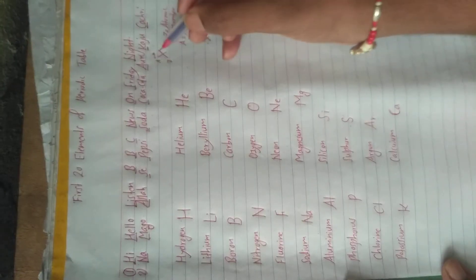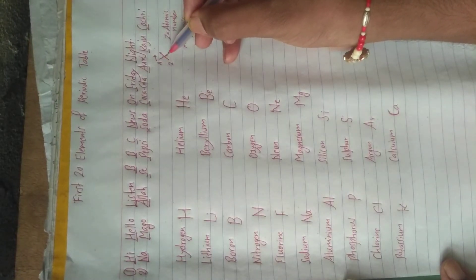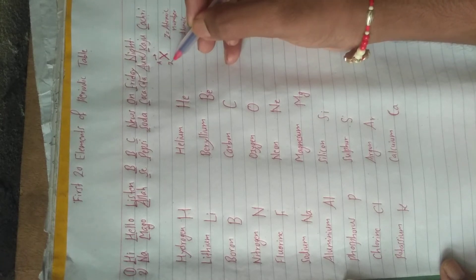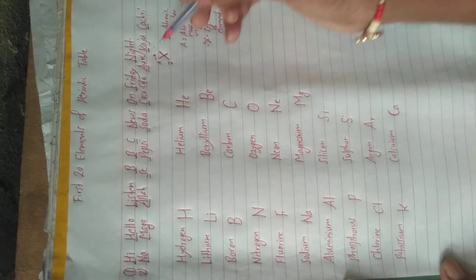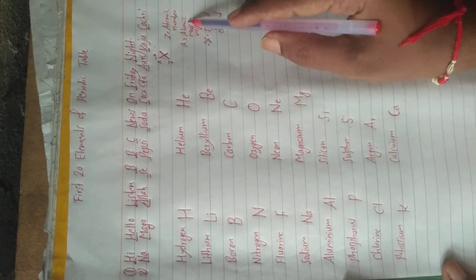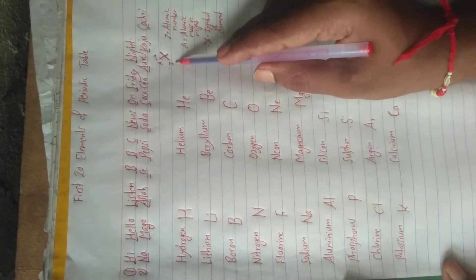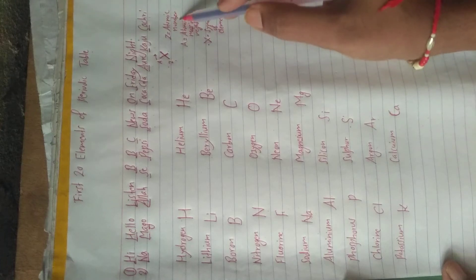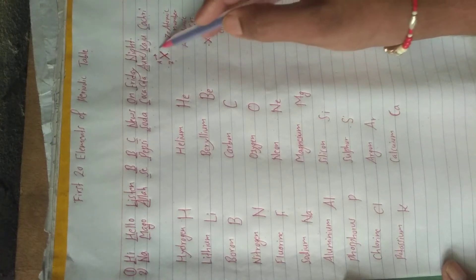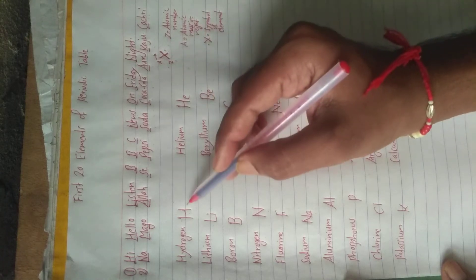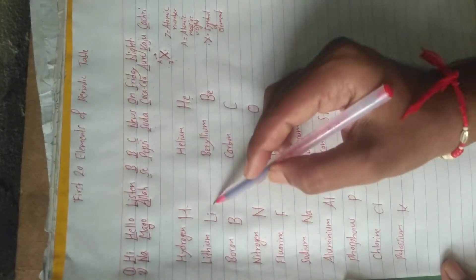For the notation: the symbol is X, A on the top represents the atomic mass or atomic weight, and Z at the base represents the atomic number. So instead of X, we place the symbols of our elements — hydrogen, helium, and so on. Z is the atomic number.